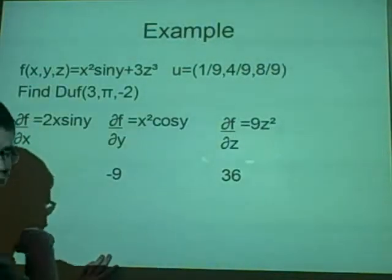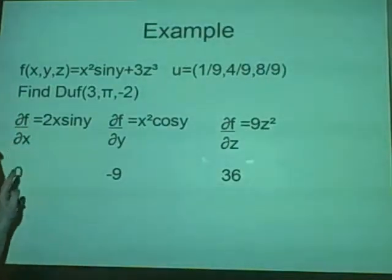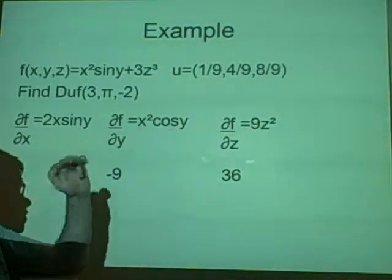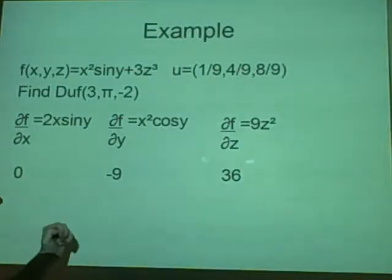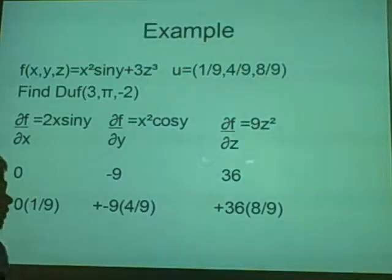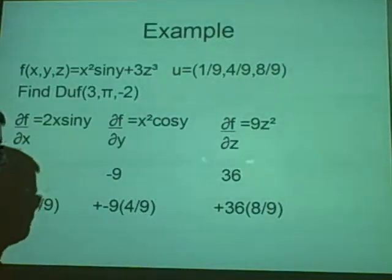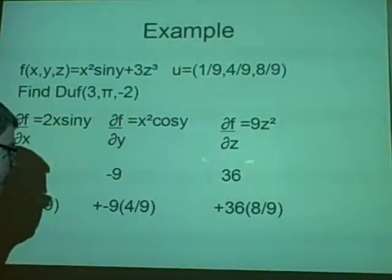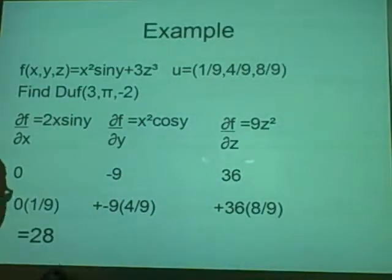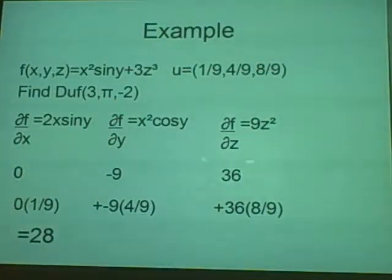Next, if you can remember from the previous slide, we want to times it by the direction. So we'll times 0 by a 9th, minus 9 by 4 9ths, and 36 by 8 9ths, which will give us 0 over here. It will give us minus 4 here, and it will give us 32 there. So minus 4 plus 32 is 28. That is our directional derivative at the point 3 pi minus 2.